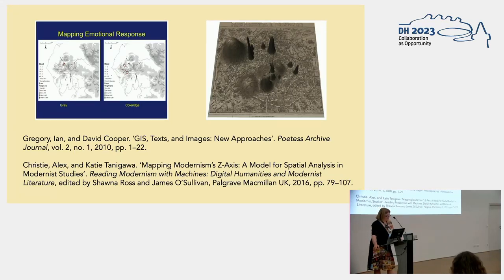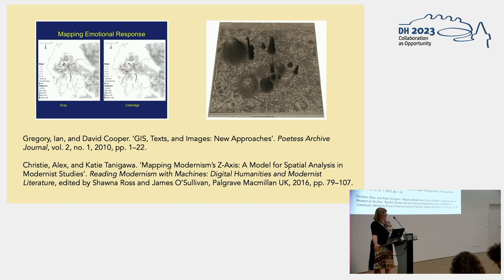Somewhat less thoughtful than these projects, though, are those that generate point maps from texts and then expect that to be the end of the story. So you mapped Bloom's journey around Dublin, you mapped Mrs. Dalloway's walk around London — so what? You have a shiny map, but what analytical insights are made possible by that mapping?